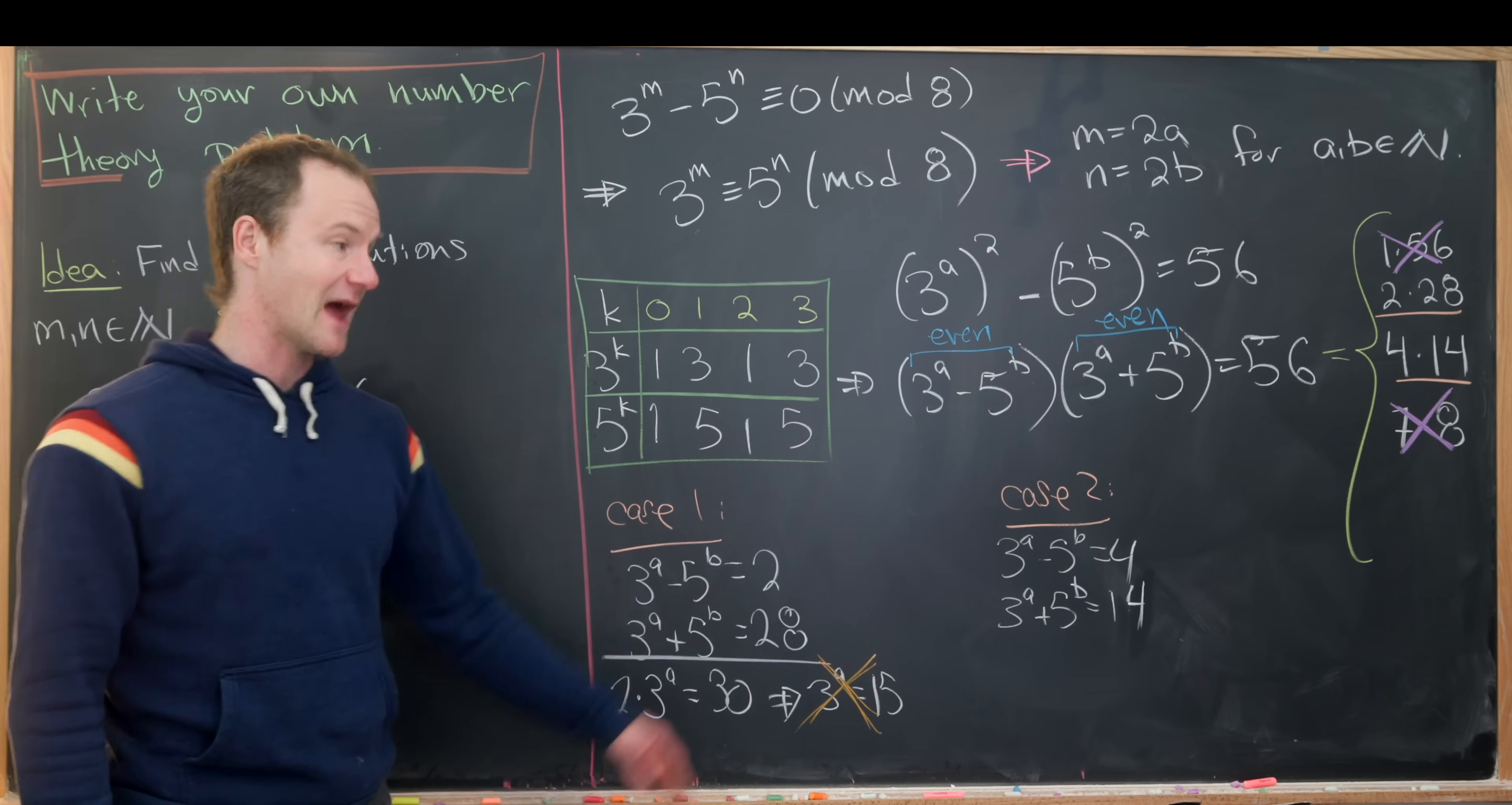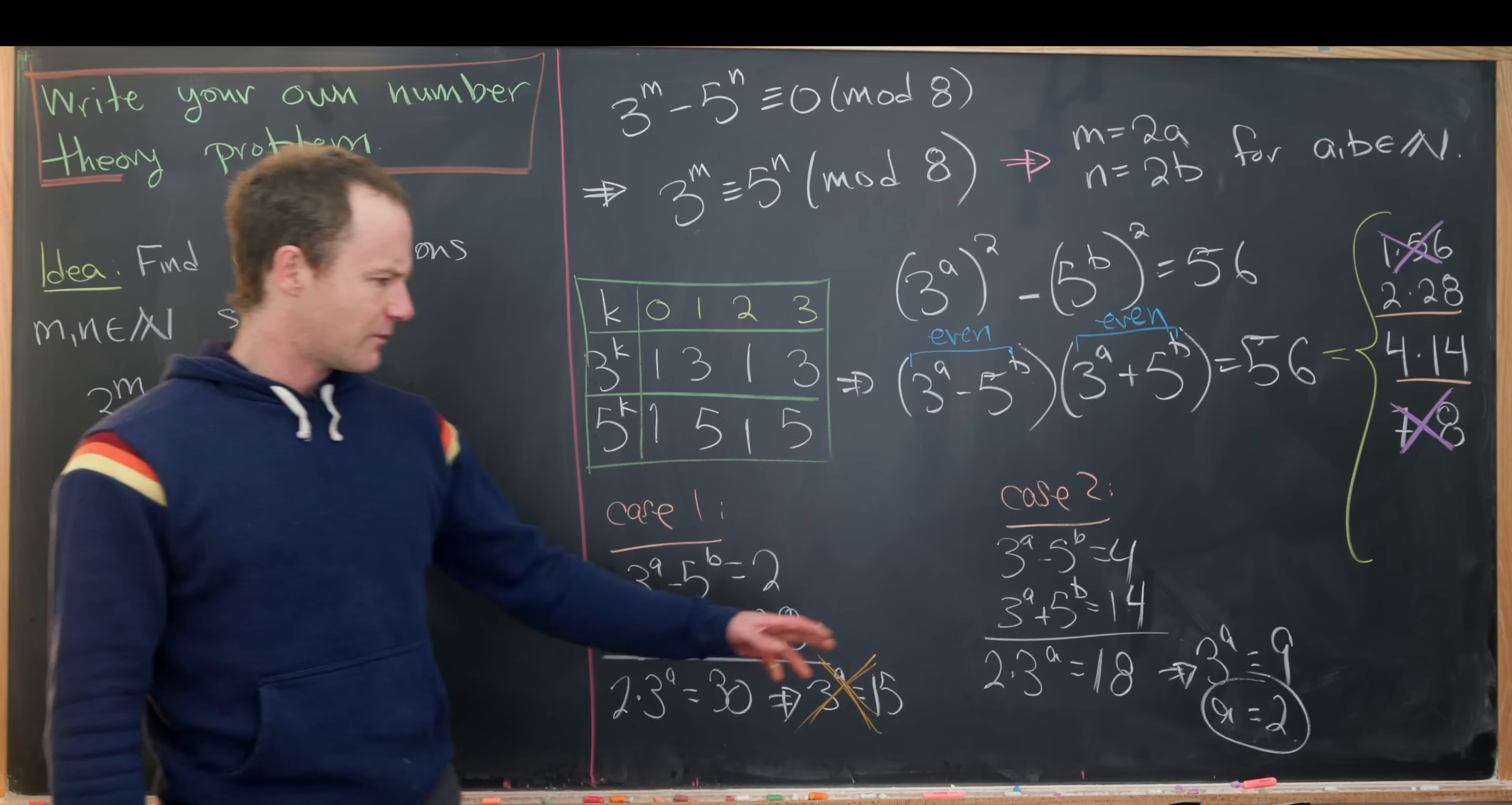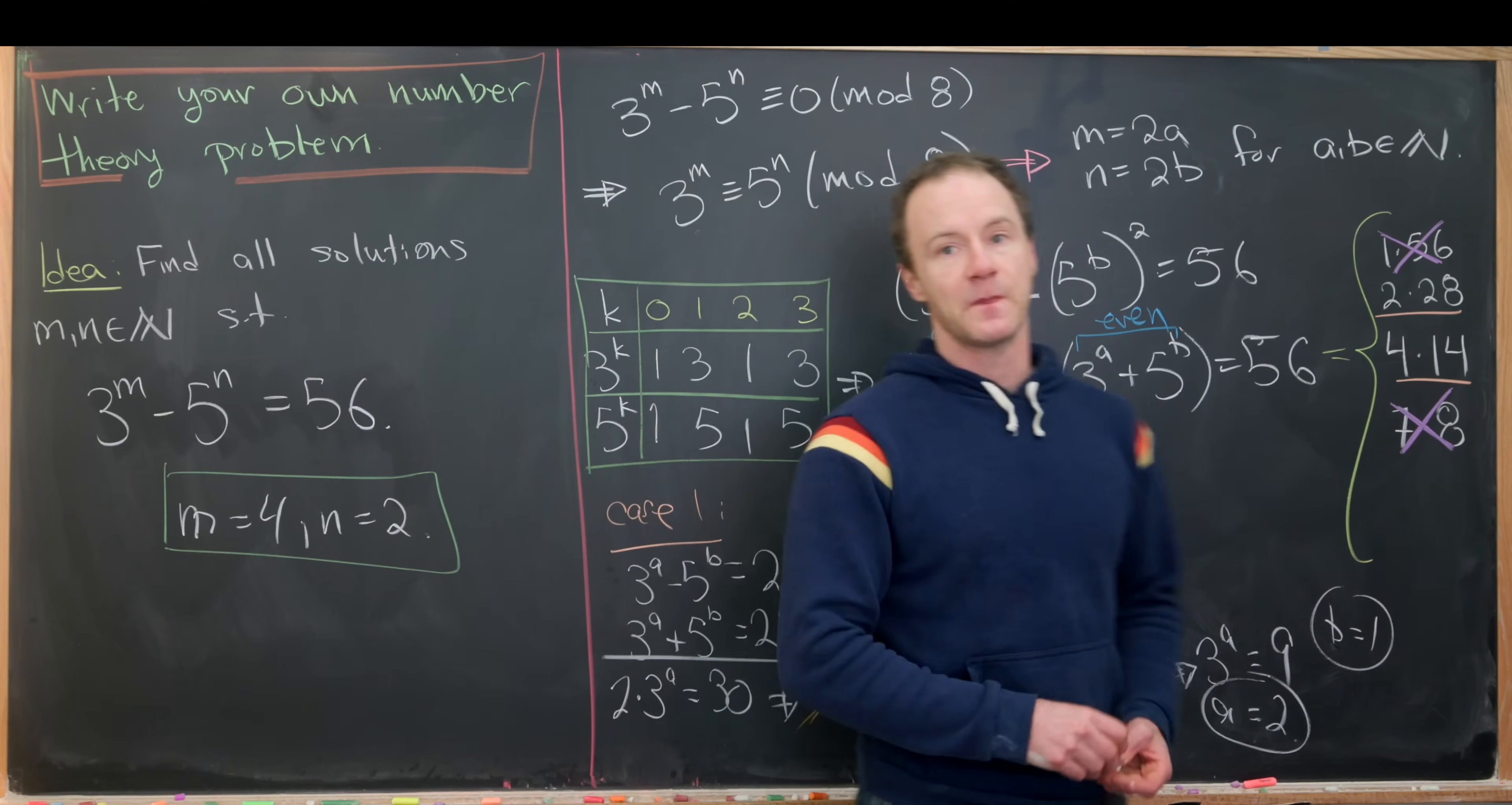Hopefully there's a solution from case two, and there is because we constructed this problem. But what we've essentially shown is that solution we started with at the very beginning is the only one. Let's add these two equations: 2 times 3 to the a equals 18, so 3 to the a equals 9, which means a equals 2. Now plugging in a equal to 2 anywhere here you'll see that b equals 1. But if a equals 2 and b equals 1, that means m equals 4 and n equals 2. So we have m equals 4 and n equals 2, which was the solution that we built all of this out of in the first place. And that's a good place to stop.